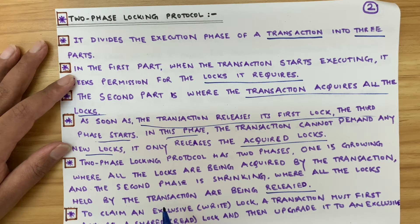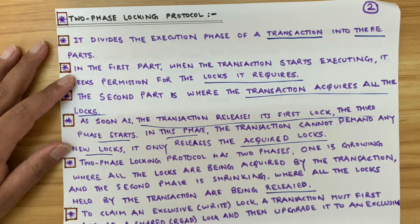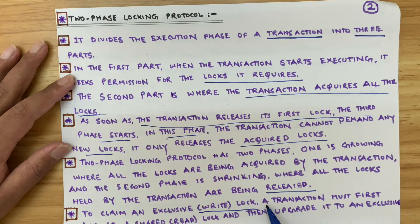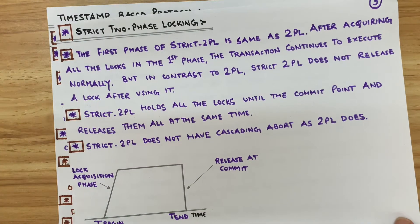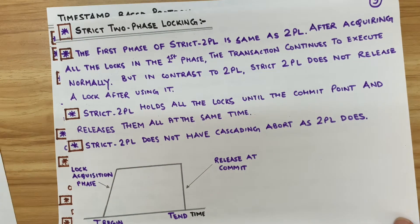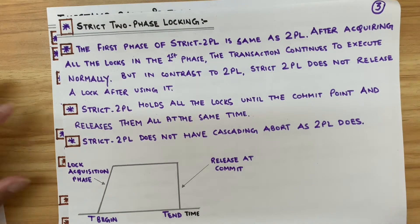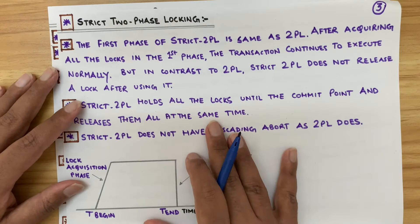First you acquire the locks, then you perform the transaction operation, and then you release the lock. To claim an exclusive write lock, a transaction must first acquire a shared read lock and then upgrade it to an exclusive lock.